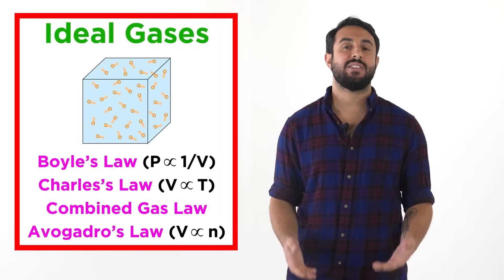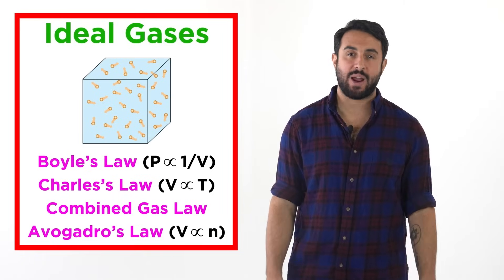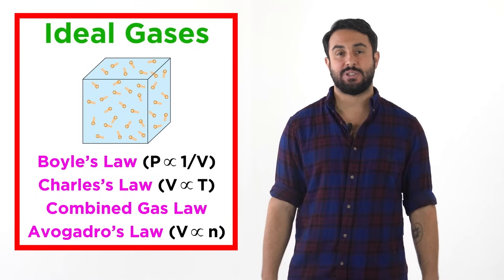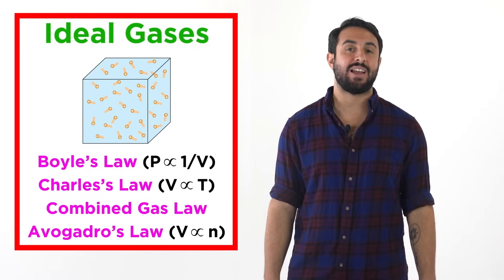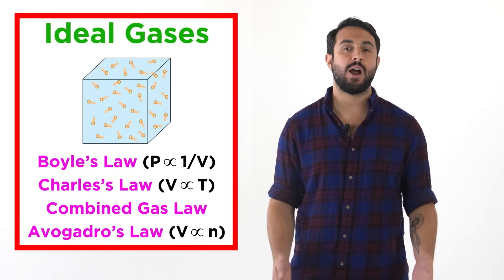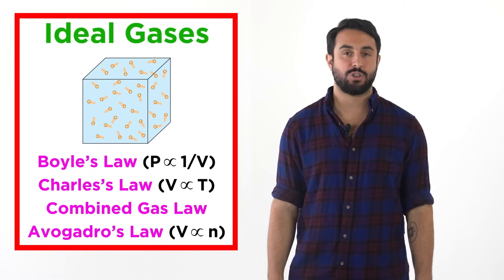Charles's law says that volume and temperature are directly proportional at constant pressure and quantity of gas. And then Avogadro's law, which tells us that as we add gas to a system at constant pressure and temperature, the volume and number of moles of gas present are directly proportional.